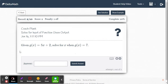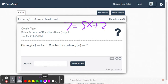In this example we have g(x) equals 5x plus 2. Solve for x when g(x) equals 7. So again we're going to replace g(x) with 7. So 7 equals 5x plus 2.